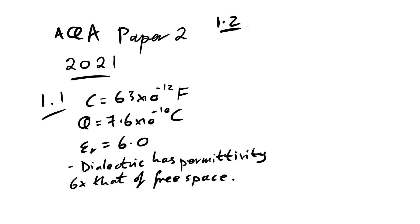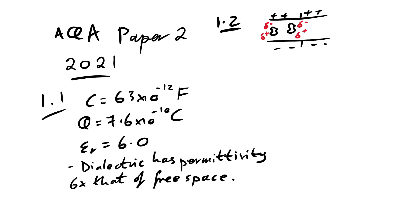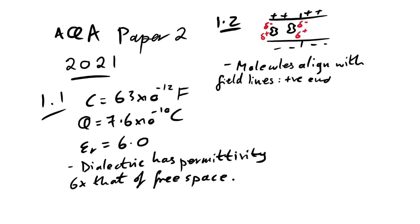Question 1.2: the mica is made up of polar molecules. As the mica is inserted, the capacitance of the capacitor changes. Explain how the polar molecules cause this change in capacitance. They like a very specific way of phrasing this. We have the positive and negative plates of the capacitor, and the polar molecules — which we can draw as little peanuts — line up with opposite ends attracted to the plates. So molecules align with field lines, with the positive end attracted to the negative plate, and vice versa.